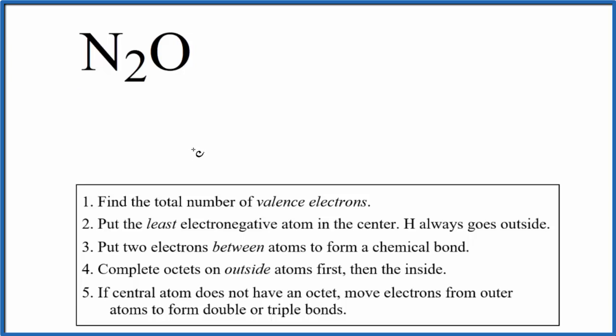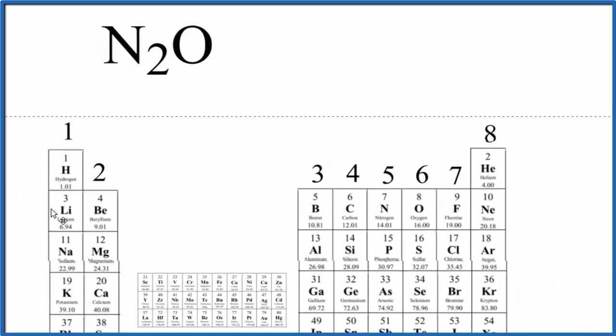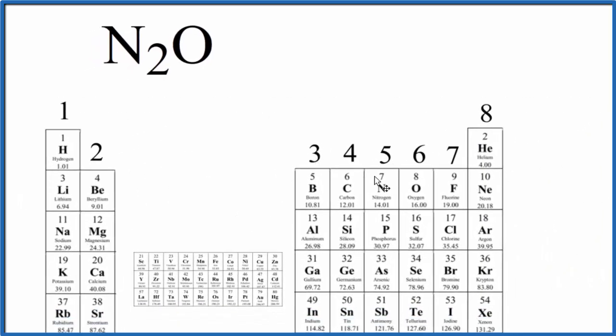The first thing we need to do with Lewis structures for something like N2O here is count up the total number of valence electrons. If we look at the periodic table here, we can see that nitrogen, group 15, sometimes called 5A, that has five valence electrons.